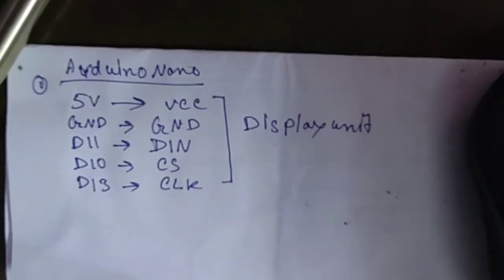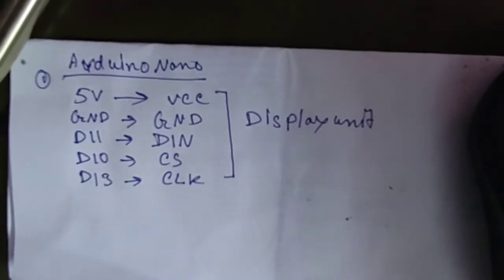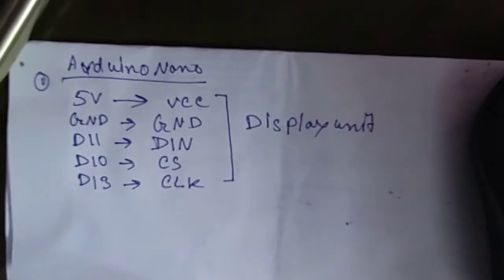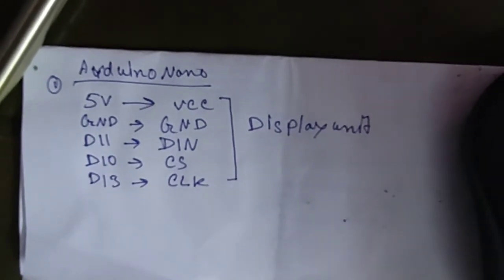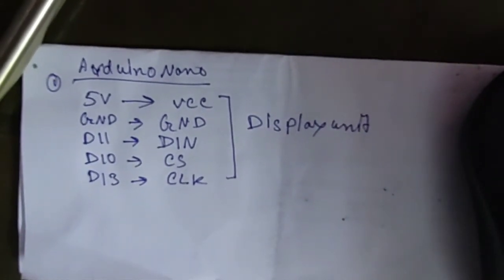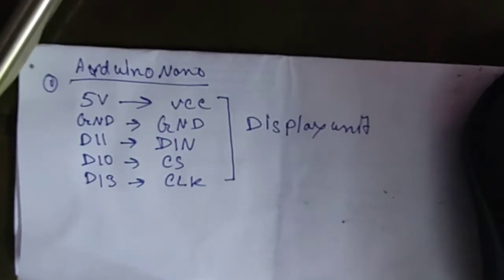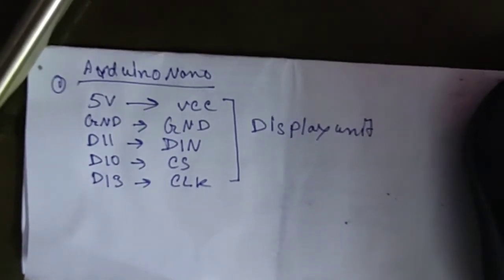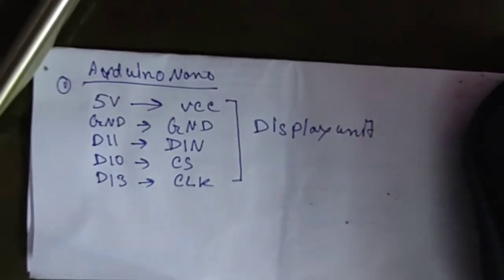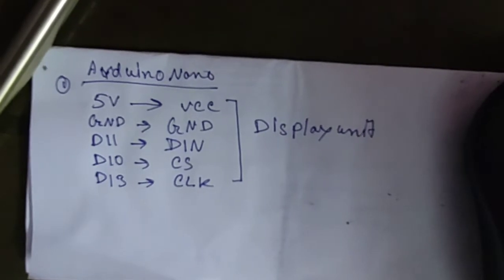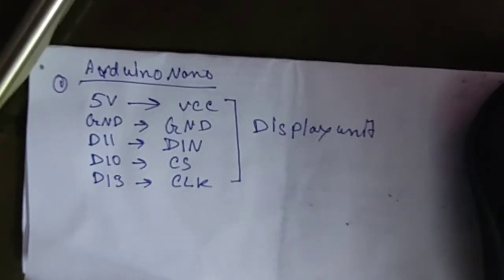You have to connect 5V of Arduino Nano with VCC of the display unit. Ground will be connected with ground. D11 of Arduino will be connected with DIN of the display unit, and D10 of Arduino Nano will be connected with CLK of the display unit.